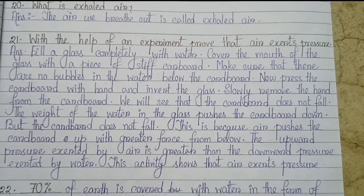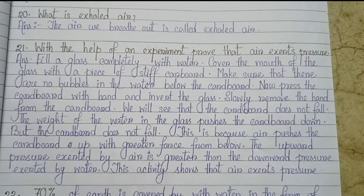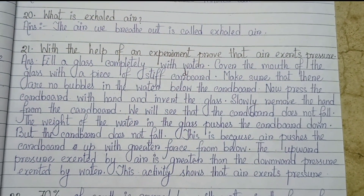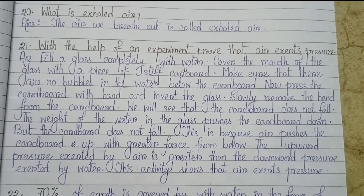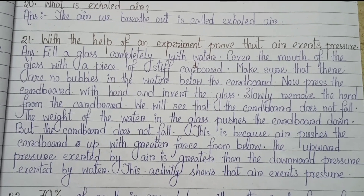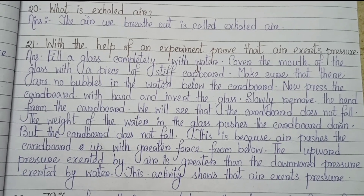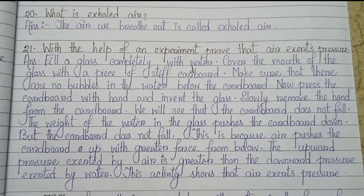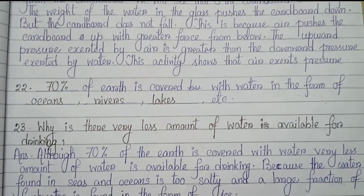With the help of an experiment, prove that air exerts pressure. Fill a glass completely with water, cover the mouth of the glass with a piece of stiff cardboard. Make sure there are no bubbles in the water below the cardboard. Now press the cardboard with your hand and invert the glass. Slowly remove the hand from the cardboard. We will see that the cardboard does not fall. The weight of the water pushes the cardboard down but it does not fall, because air pushes the cardboard up with greater force from below. The upward pressure exerted by air is greater than the downward pressure exerted by water. This activity shows that air exerts pressure.